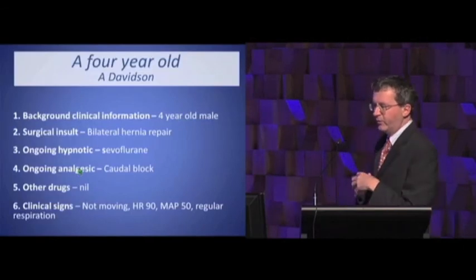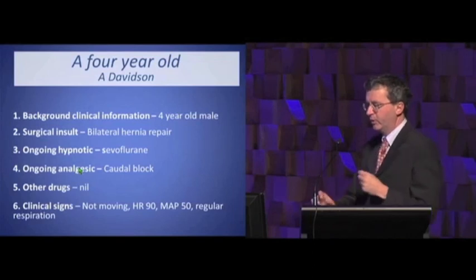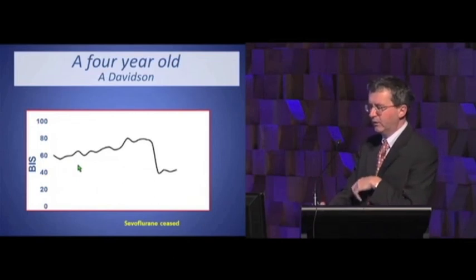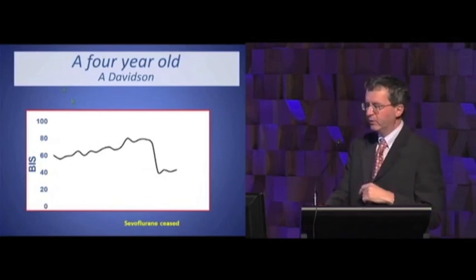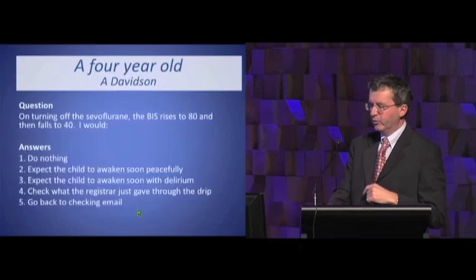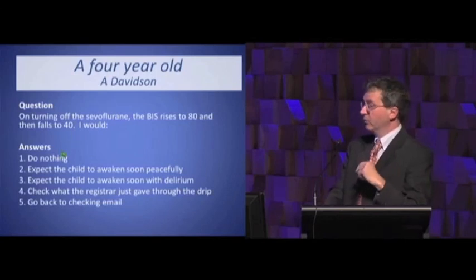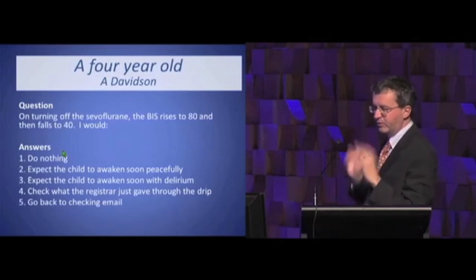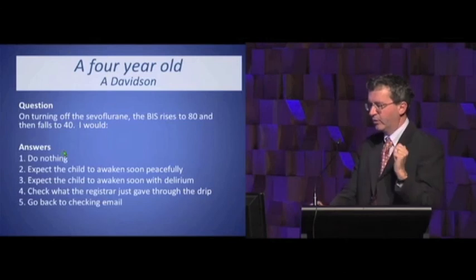Next case: a four-year-old bilateral inguinal hernia repair, sevoflurane once again, caudal block, no other drugs. Clinical signs: not moving, heart rate 90, blood pressure 50, regular respiration. At the end of the case, you've turned off the sevoflurane, the BIS is slowly rising — and then it suddenly falls down to about 40. The BIS was rising to 80 and then suddenly falls to 40. What would you do: do nothing, expect the child to awaken soon and peacefully, expect emergence delirium, check what the registrar just gave in the drip, or go back to checking your email?